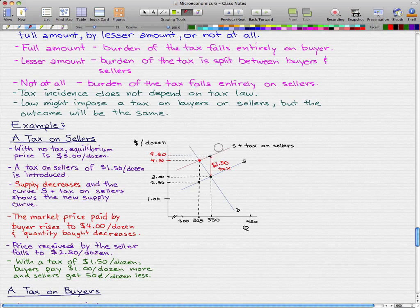At this intersection between the demand and supply curve, that is actually the price that buyers have to pay. Now they have to pay $4, where before they had to pay only $3. And for sellers, where they were receiving $3, now they only receive $2.50. So sellers lost $0.50, and buyers have to pay $1 more.